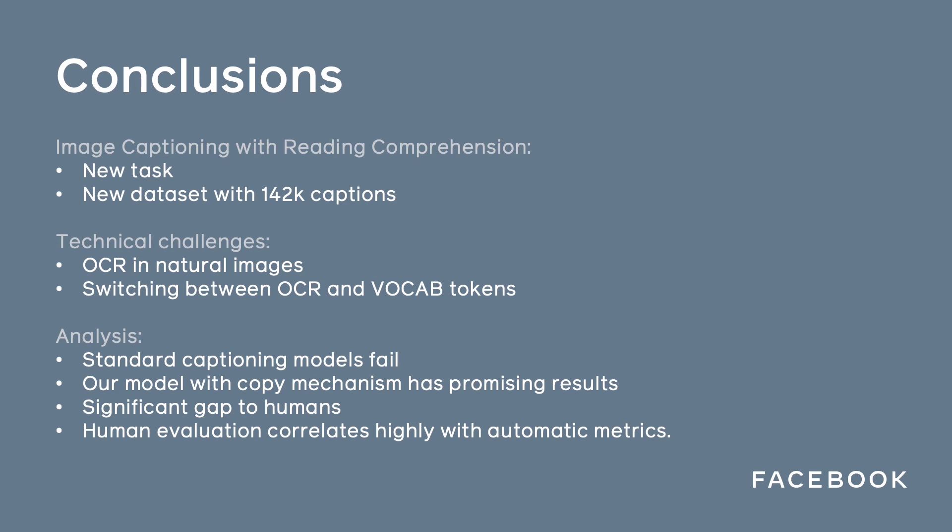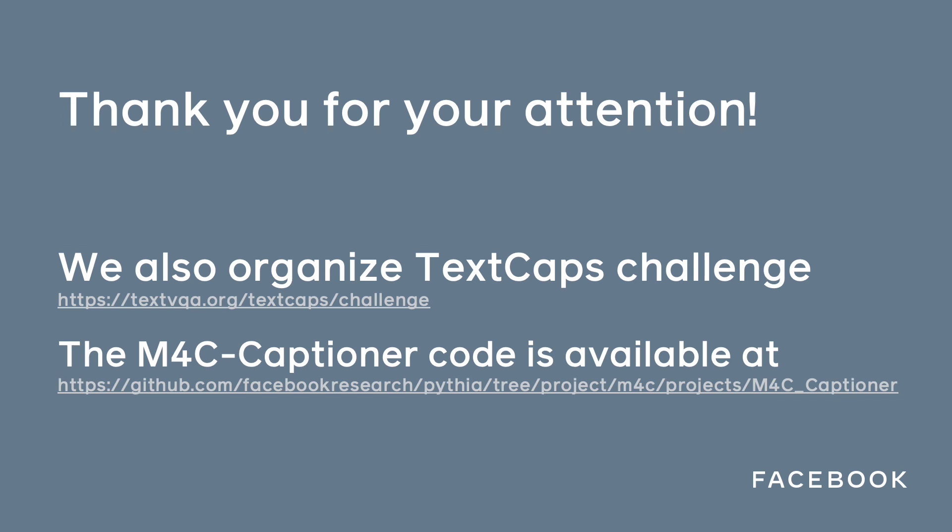So eventually we propose a new task and a new large dataset. We show that this task creates new challenges, such as extracting text from images and combining it with vocabulary. Our analysis shows that conventional models fail on this task, whereas models with copying capabilities produce promising results, but there is still a lot of room to human performance. We also organize a challenge on this task, which we invite you to participate in, and we invite you to check out our code. Thank you.